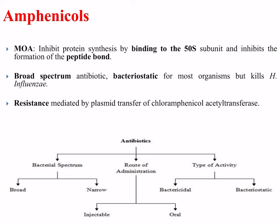Amphenicols inhibit protein synthesis by binding to the 50S subunit and inhibit the formation of the peptide bond. These are a broad spectrum class of antibiotic; they are bacteriostatic for most organisms but kill Haemophilus influenzae. Resistance is mediated by plasmid transfer of the enzyme chloramphenicol acetyltransferase, which renders the molecule ineffective. A flow chart classifying antibiotics by spectrum of action, route of administration, and type of activity is shown at the bottom.